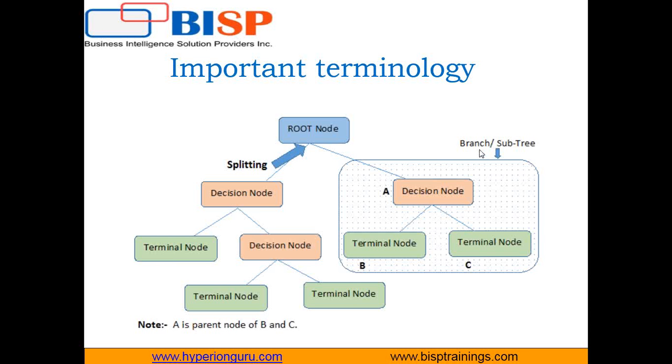Branches or sub-trees are subsections of the entire tree. A section that is part of the root node is called a sub-tree. Let's now understand decision tree with an example and see how to create a decision tree in R programming.